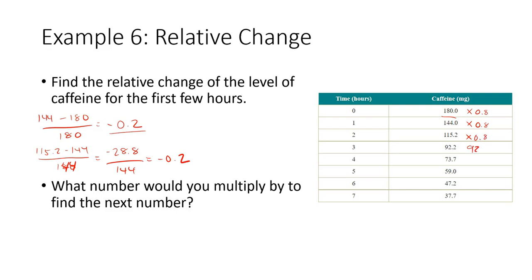So the relative change tells us how the percentage goes down, but the number we want to multiply by is essentially 1 minus this number or the percentage that's left over. If we're left with 80% each time, then we would multiply by 0.8. So the number we would multiply to find the next one would be 0.8.